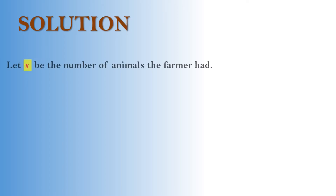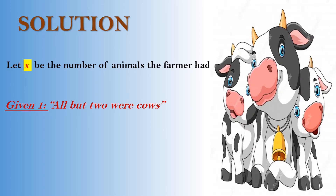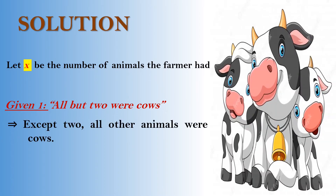Solution. Let X be the number of animals the farmer had. It is given that all but two were cows. This implies that except two, all other animals were cows. Therefore, number of cows equals X minus 2.